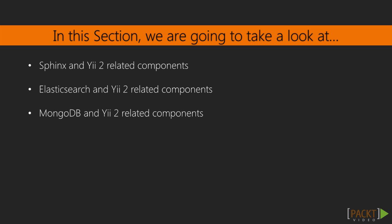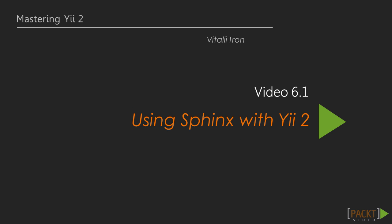In this section we will consider some of the most popular software for full text search: Sphinx, Elasticsearch, and MongoDB. What is interesting is that the Y2 framework has its own components to support each of these engines. And now let's move on to video 6.1: Sphinx and Y2 related components.